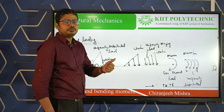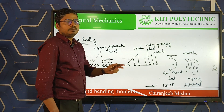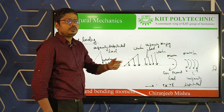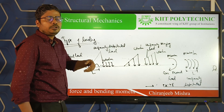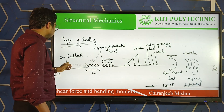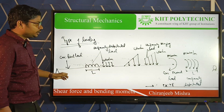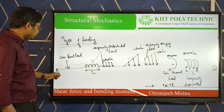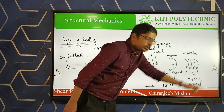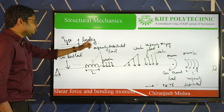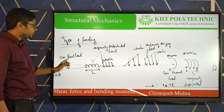Before drawing the bending moment and shear force diagram, we first learned about types of support, then types of beams, and now the third topic is types of loading. The types of loading we generally encounter are: first is concentrated point load. I have drawn a simply supported beam — hinge support on the left and roller support on the right.